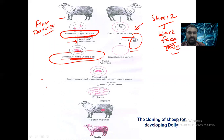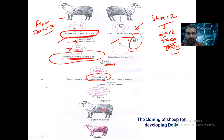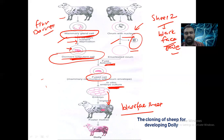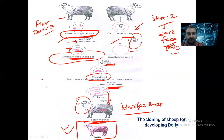The dormant totipotent cell from the mammary gland, with its nucleus intact, was fused with the enucleated ovum. The fused cell was grown in culture medium, forming an embryo. Once differentiation occurred, it was implanted into the surrogate mother — the black-faced sheep. Even though the surrogate mother had a black face, the Dolly produced had features similar to the Finn Dorset sheep.